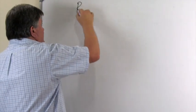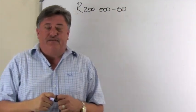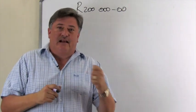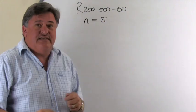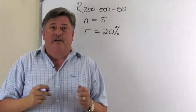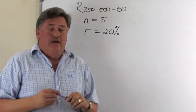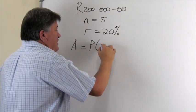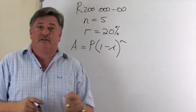To find the scrap value, we need to apply compound depreciation, also referred to as the reducing balance. The original price of this machine is 200,000 Rand. The machine is sold after five years, so N equals 5 years. The rate of depreciation is 20% per annum. Remember that depreciation is always yearly. The formula for depreciation is A = P(1 − i)^n, with a minus sign because it depreciates.